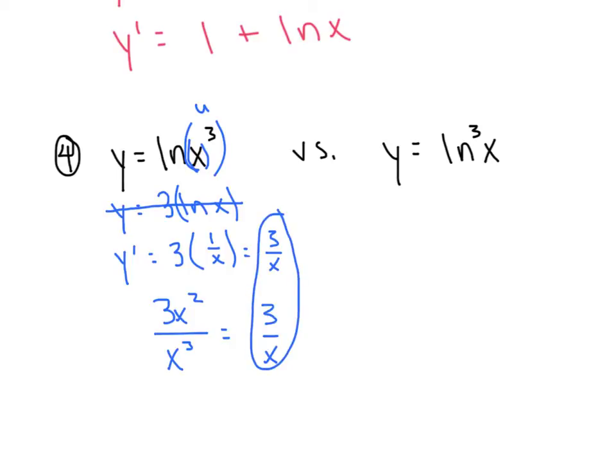Now compare that to the one on the right. This one is saying that the entire function, natural log of x, is getting cubed, as opposed to just the x being cubed on the left. So I'm going to use my chain rule, and I'm going to say 3 times that inner function now squared times the derivative of the inside, and that's about as cute as we could make it look.